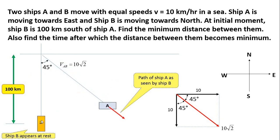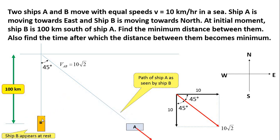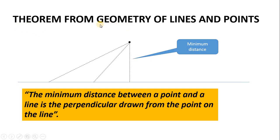The ship A appears to move along this line — this is the path of ship A as seen by the observer in B. We have to find the minimum distance. As ship A starts from here and keeps moving along this path with respect to the observer, in between there will be a moment when the distance is minimum, and that is the perpendicular distance onto this line. From geometry, the minimum distance between a point and a line is the perpendicular drawn from the point onto the line.